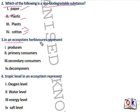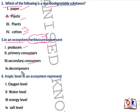Question number 3: in an ecosystem, herbivores represent? Herbivores depend on the producers. So first are producers, then herbivores are called primary consumers. Options given are producers, primary consumers, secondary consumers, and decomposers. Primary consumers will be the right answer.